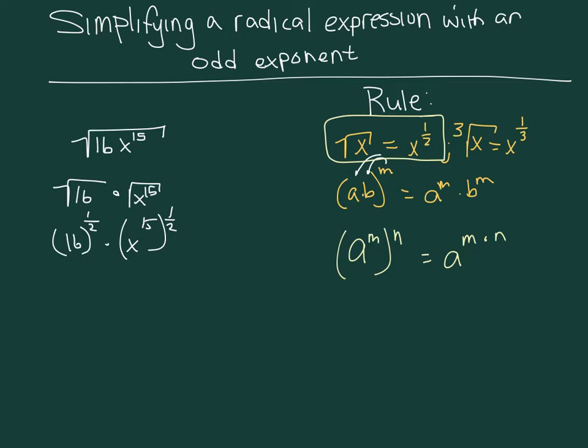So coming back over here to the left, we know that 16 is actually 4 squared to the one half times x to the 15th. And what I'm going to do is I'm actually going to separate this out, and I'm going to call it x to the 14th times x to the 1st. Now the reason I can do that is because of this rule here.